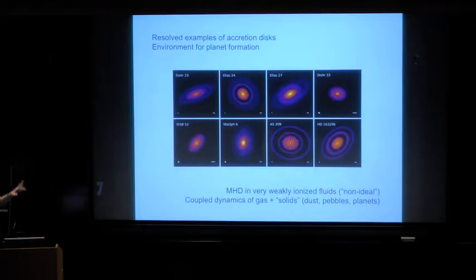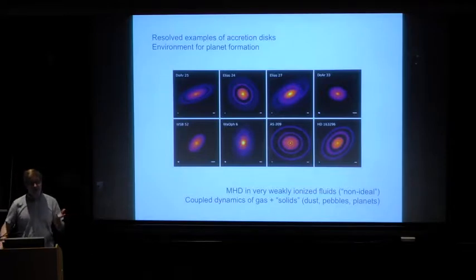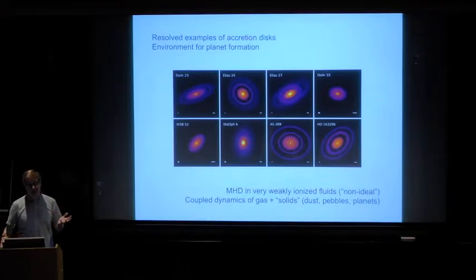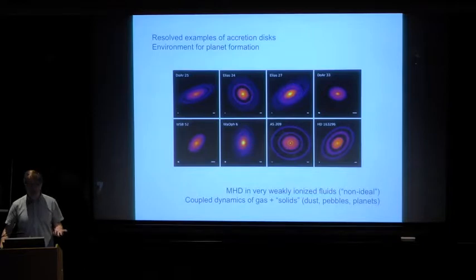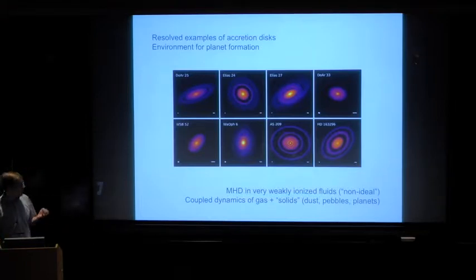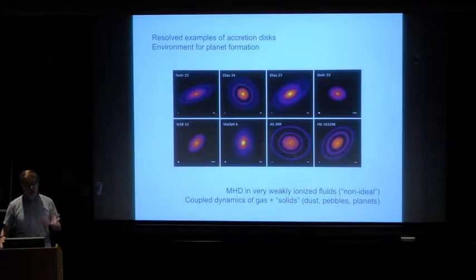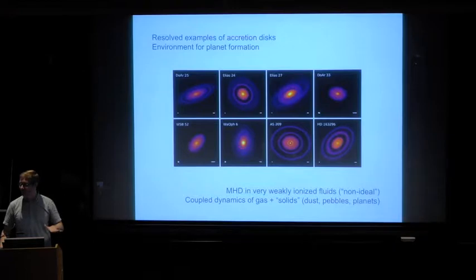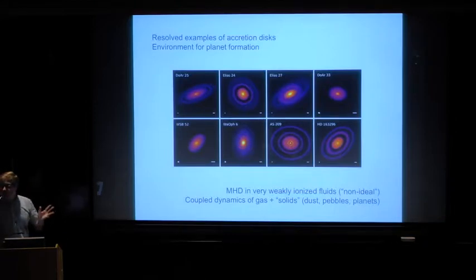So there are two things we can talk about. One is: in what sense are protoplanetary disks accretion disks like other accretion disks, and in what sense are they different? The obvious reason they're different is that they're very cold. If you're close to the star you might be dealing with temperatures of a few thousand degrees Kelvin, but at 100 AU the temperatures are more like tens of Kelvin or even 10 Kelvin — very, very cold, and therefore very weakly ionized. We're sort of below the bottom of the plasma part of the plot, in the region where the ionization fraction is very weak.